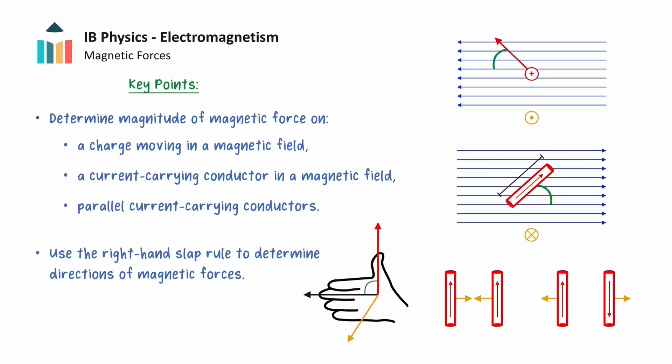This video will explore concepts related to forces due to magnetic fields. We will analyse how magnetic fields can exert magnetic forces on both moving charges and current-carrying conductors. We will state the equations for the magnitudes of these forces and show how to use the right-hand slap rule to determine the direction of the forces. We will end this video with a study on the magnetic force between parallel current-carrying wires.